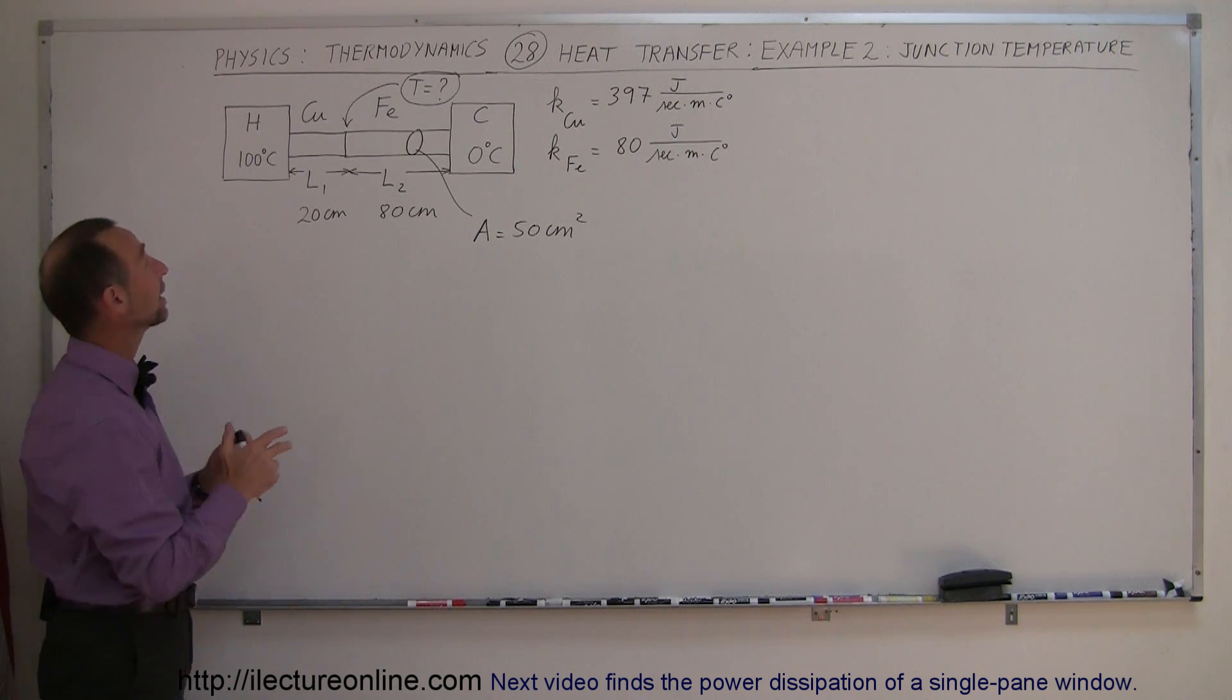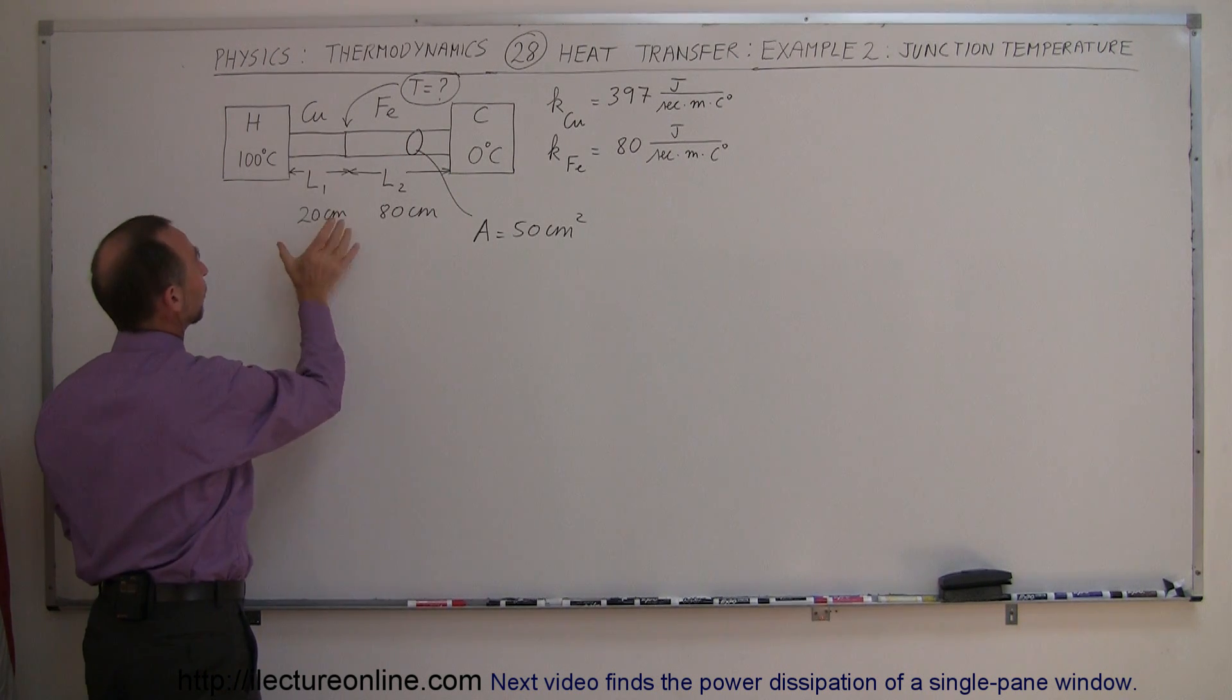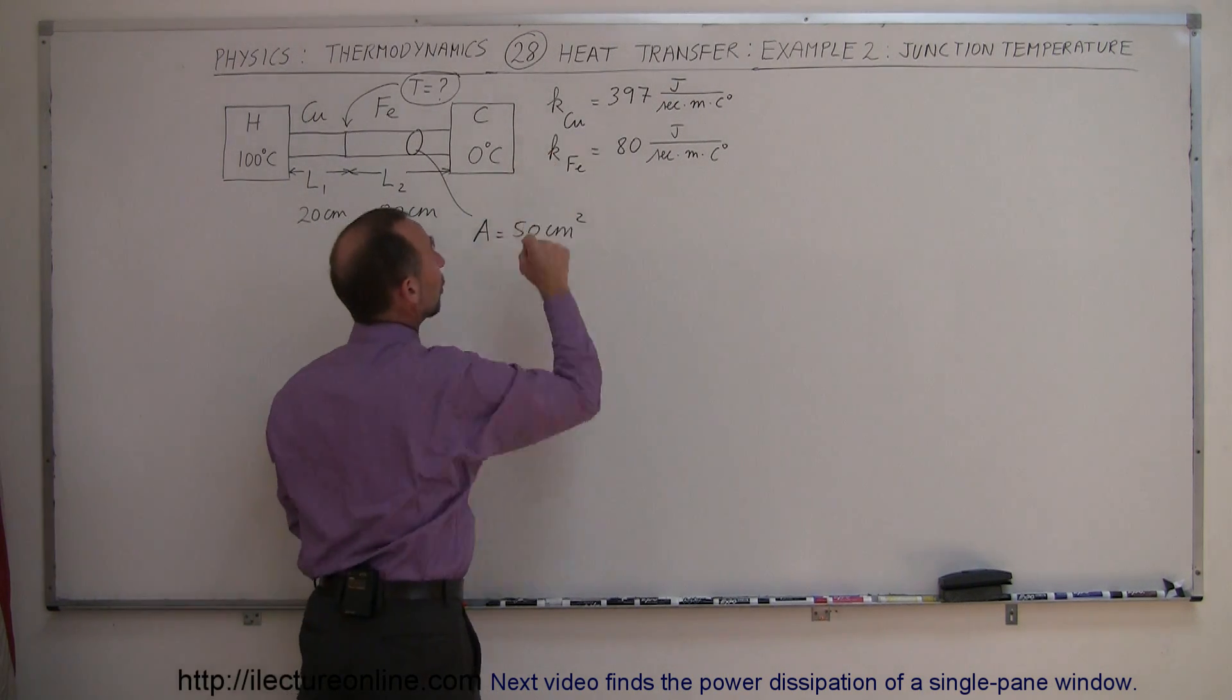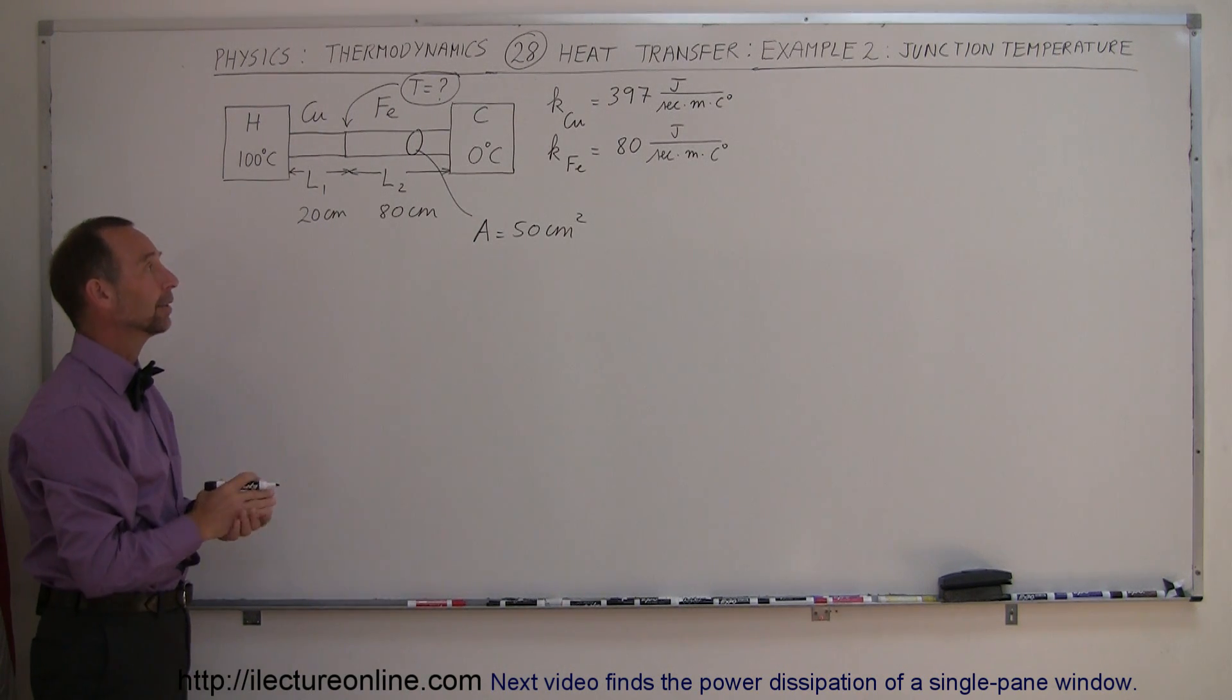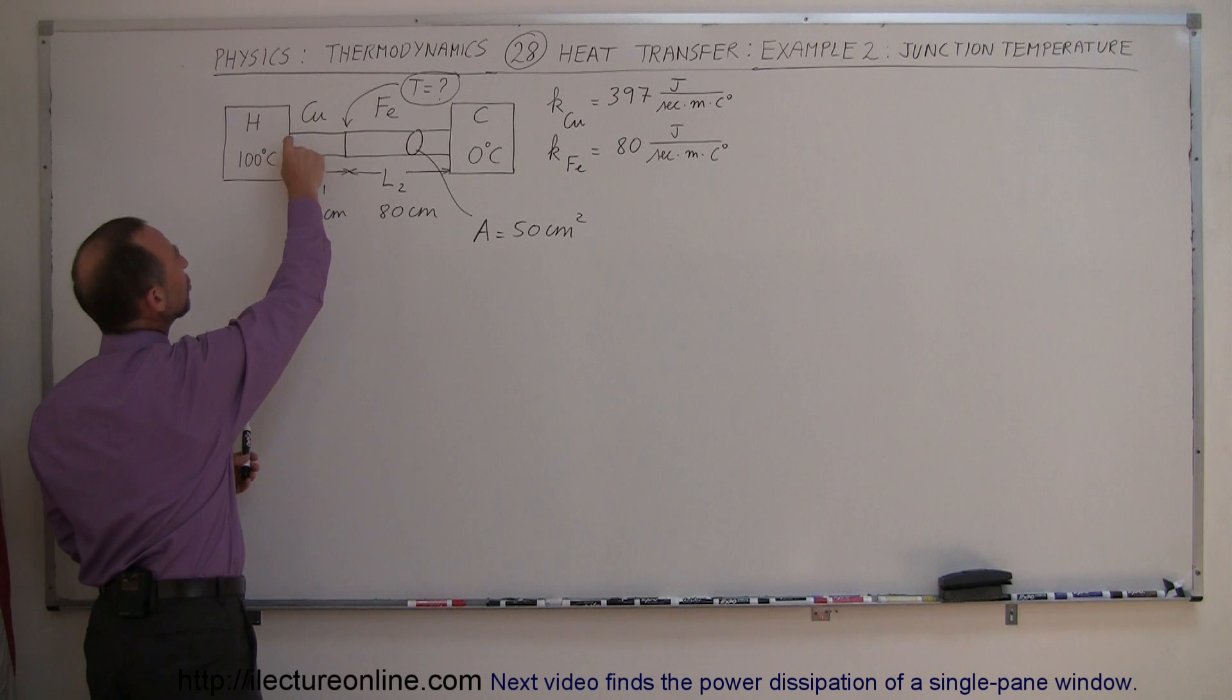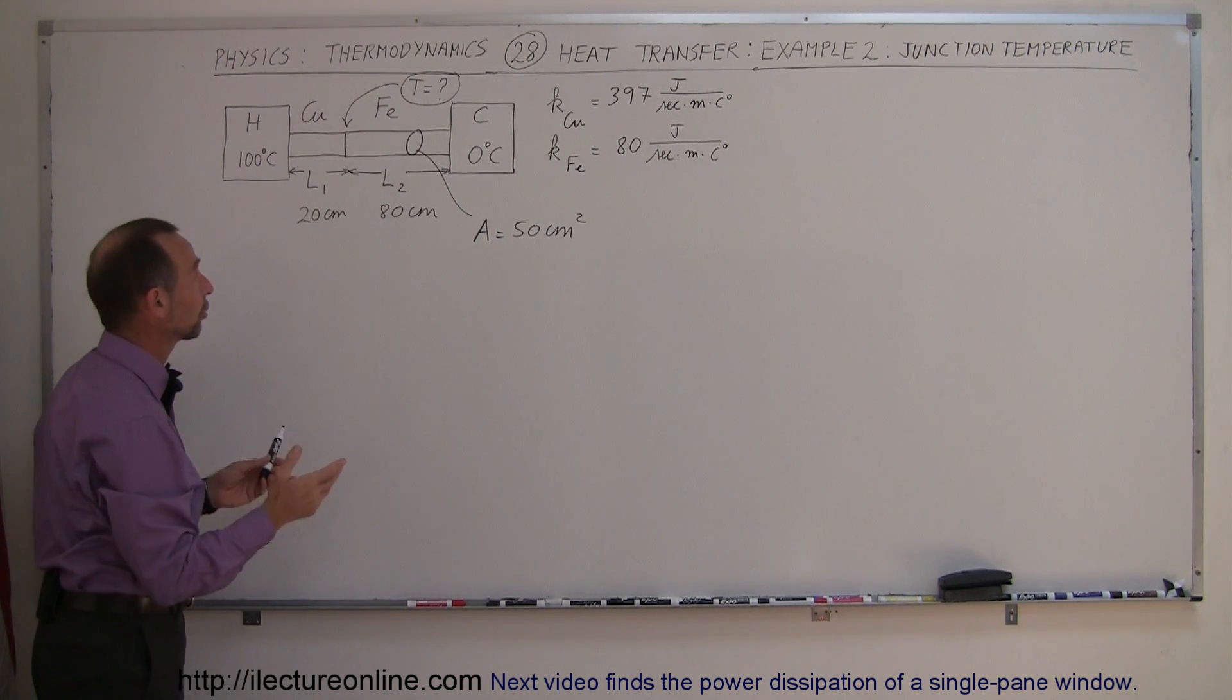Now what we're trying to find here is the junction temperature, the temperature at the point where the copper and the iron meet. The copper bar is a lot shorter, the iron bar is a lot bigger, and they have different conductivity constants. Copper conducts heat a lot better than the iron does. The trick here is to realize that the amount of heat being transferred on the bar has to be constant throughout the bar. It doesn't matter if the material changes.